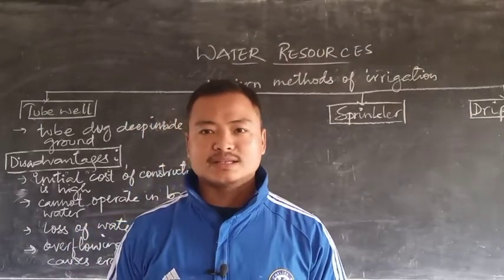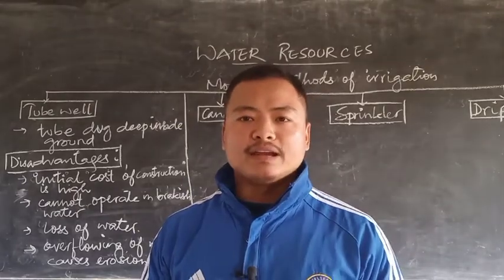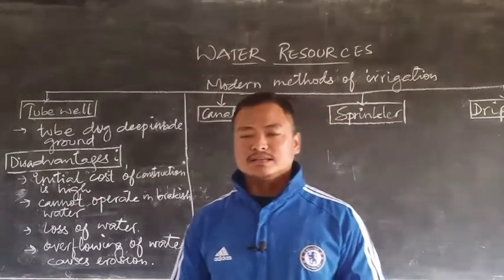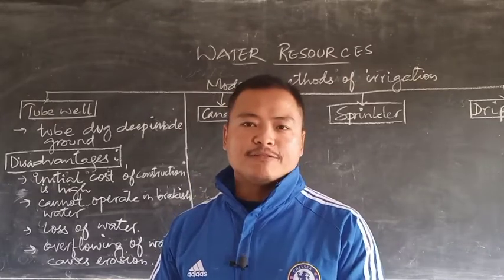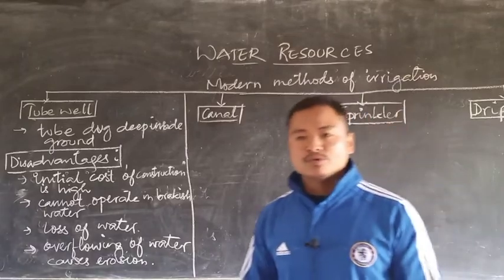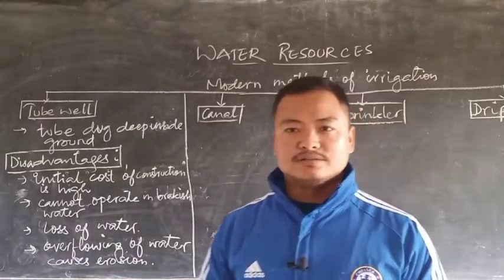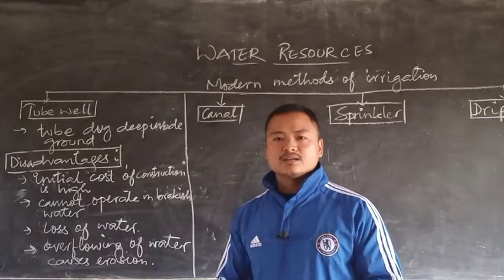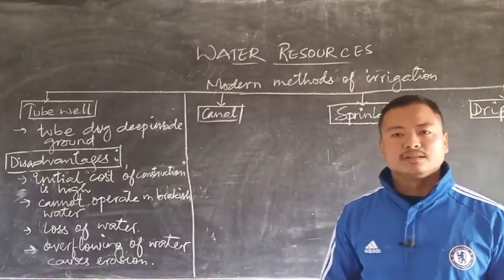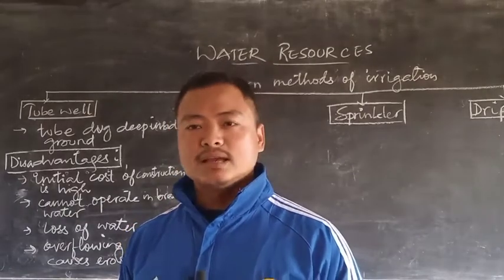The second modern method of irrigation is canal irrigation. Canal irrigation is a modified version of the inundation canals we discussed as a traditional method of irrigation. In India, canal irrigation is mostly constructed by building dams or barrages across rivers; the water conserved in the reservoir is then taken to the fields through canals constructed along the riverbanks. This way, water becomes available even during drier periods — mainly early summer and winter — when rainfall is not experienced.